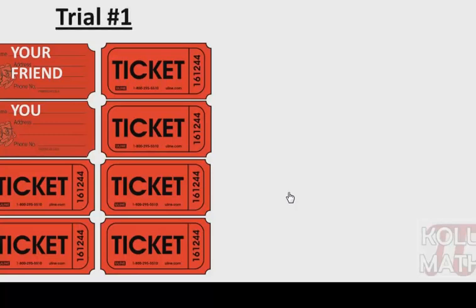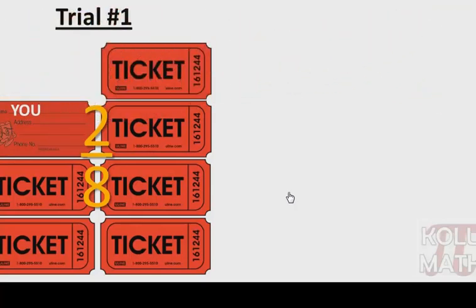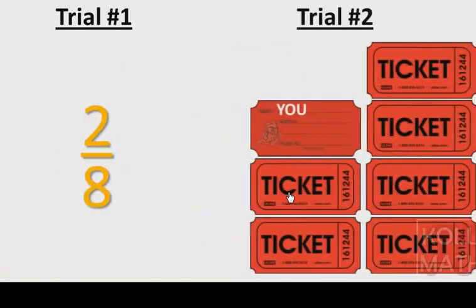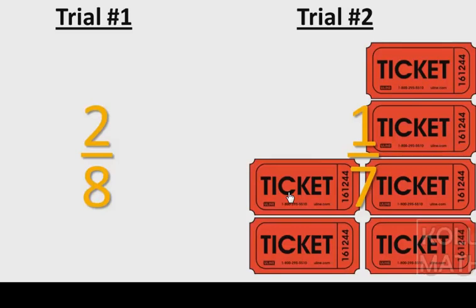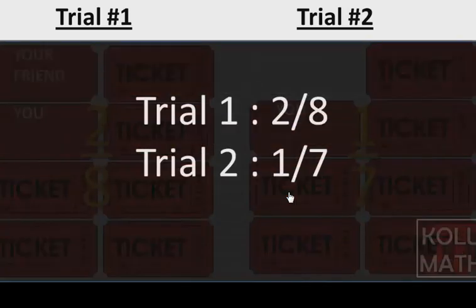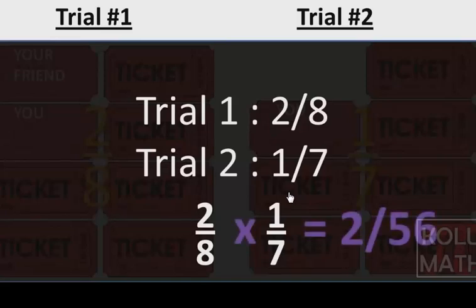Let's take a look at trial one. We have all eight tickets. Both you and your friend are still there. That gives us two tickets that will make us happy out of eight total tickets. Once one of those tickets is removed, we have seven total tickets now and one of those is a winner for us. So we have two fractions: two over eight, one over seven. Two over eight times one over seven gives you two over 56, or one over 28. Still pretty rare odds of both you and your friend winning in even such a small raffle.